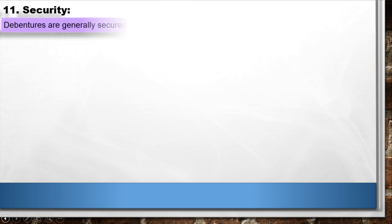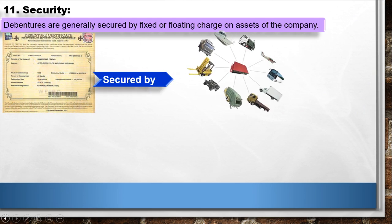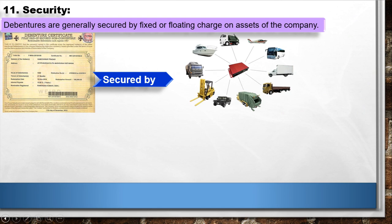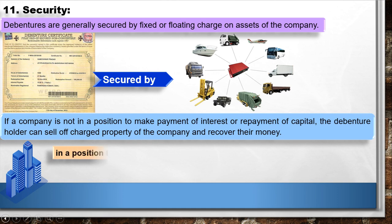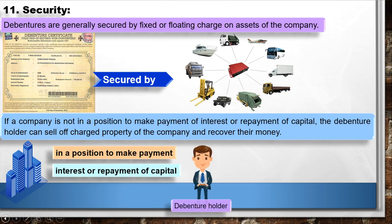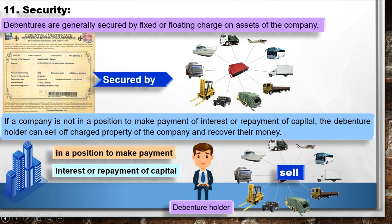11. Security: Debentures are generally secured by fixed or floating charge on the assets of the company. 12. If the company is not in a position to make payment of interest or repayment of capital, the debenture holder can sell off the charged property of the company and recover their money.